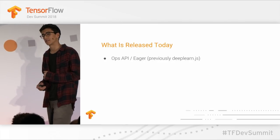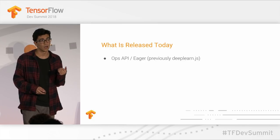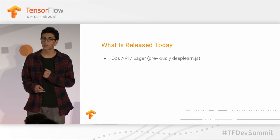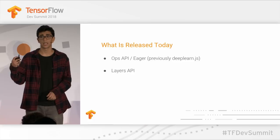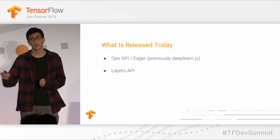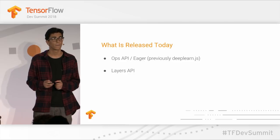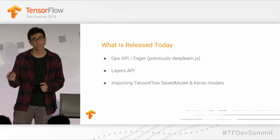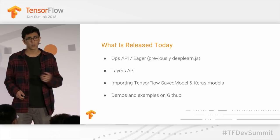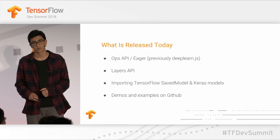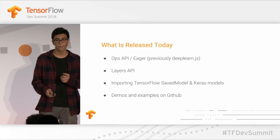Let's recap what we launched today. We talked about the low-level Ops API — hardware-accelerated linear algebra with eager-mode Autograd differentiation — previously known as DeepLearn.js, rebranded today. We released the high-level Layers API, a Keras-inspired API that mirrors TensorFlow layers, seen in the addition RNN example and the Pac-Man demo. We showed how you can import TensorFlow SavedModels and Keras models for prediction and retraining in the browser. We've also released a bunch of demos and examples on GitHub — they all have live links so you can go poke around and play.